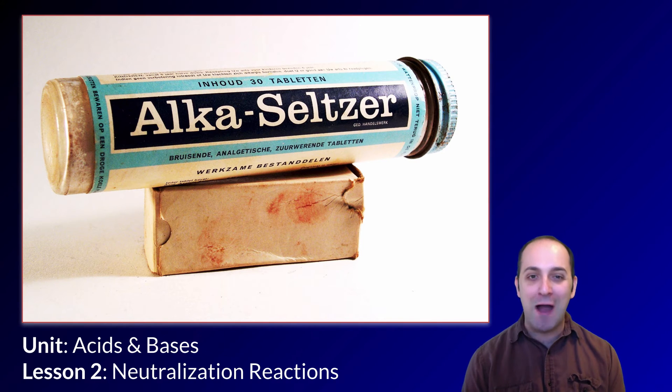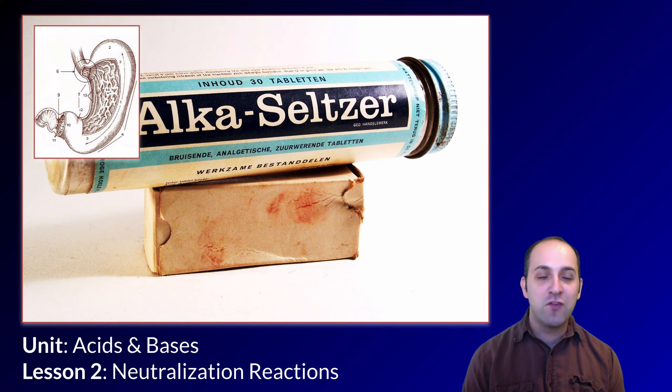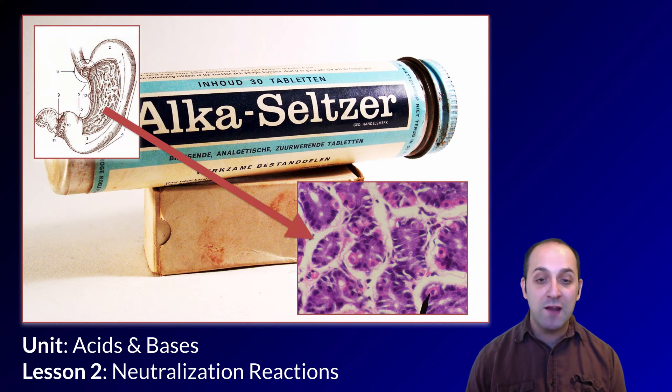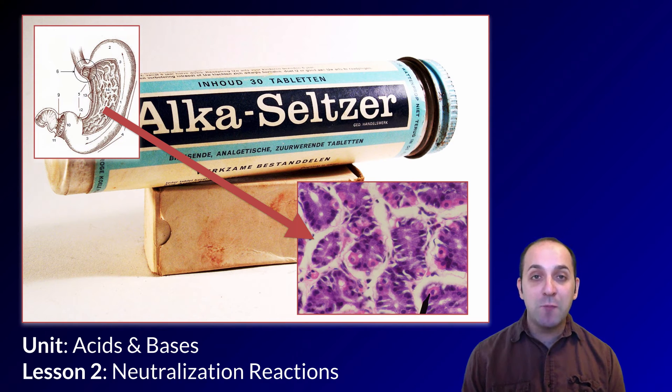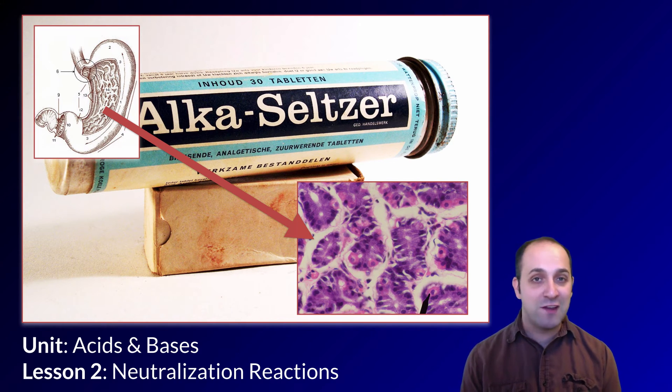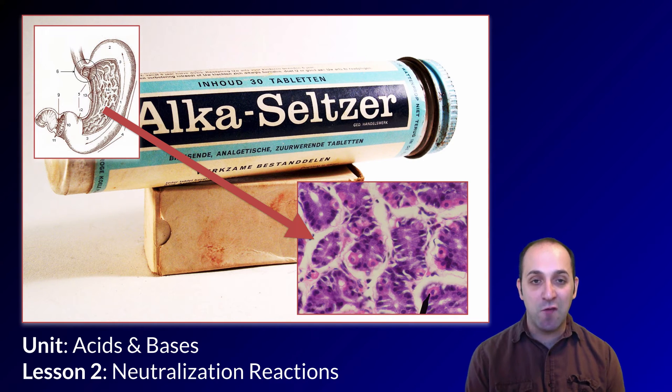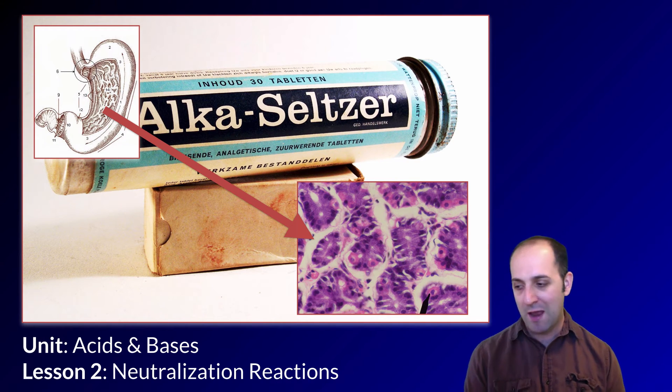Here we see an ancient tube of Alka-Seltzer, and you may be familiar with it. You take it when you have an upset stomach or your stomach is not feeling so good. The reason why this works is because your stomach produces a lot of gastric juice, and one of the main ingredients of gastric juice produced by these parietal cells is hydrochloric acid. If your stomach is producing too much hydrochloric acid at the wrong time, you may not feel very comfortable, and that's when you turn to Alka-Seltzer, which is going to neutralize some of the hydrochloric acid in your stomach, bring the pH back up a little bit, and make you feel a little bit better.